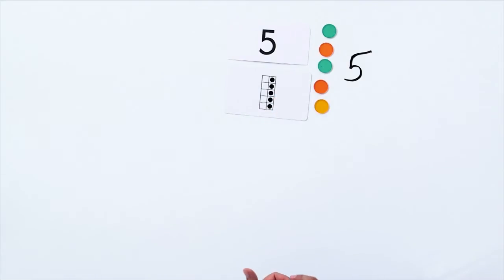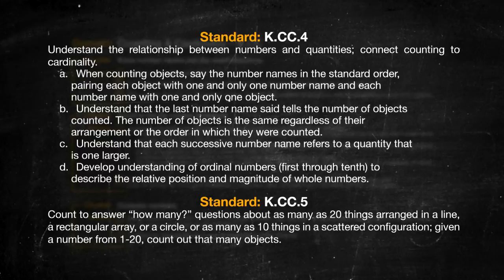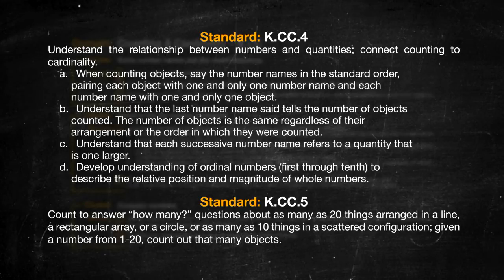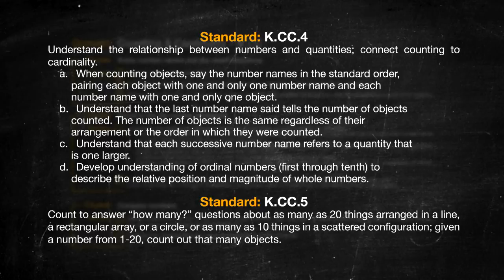On to standards four and five. One goal is for students to count using one-to-one correspondence. Another goal is for students to connect a group of objects with the number word and the numeral that represents that group — for example, four gummy bears, the number word 'four,' and the numeral 4. Another goal is for students to begin to unitize — to immediately recognize how many objects are in a small group. Finally, we want students to begin to understand ordinal numbers: first, second, third, fourth, etc.